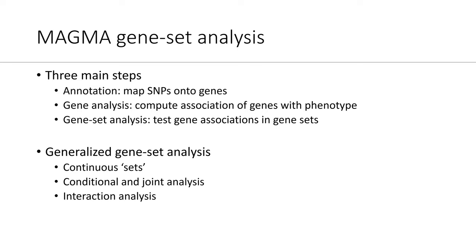For MAGMA gene set analysis, there are three main steps. Step one is annotation, where we map SNPs to genes — MAGMA needs to know which SNPs to analyze as part of which gene. Step two is the gene analysis, where we compute the association of the gene with the phenotype; the unit of analysis is the gene. Step three is the gene set analysis, where the association of gene sets is tested against your phenotype.